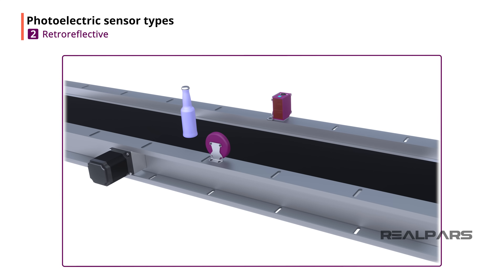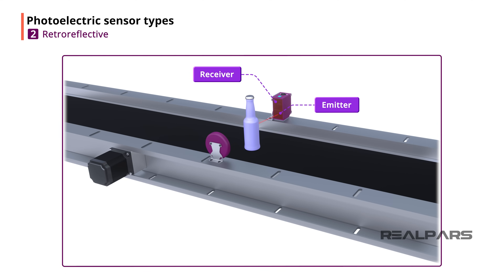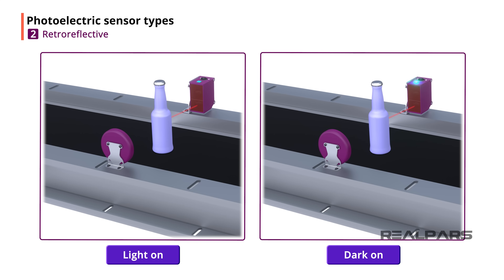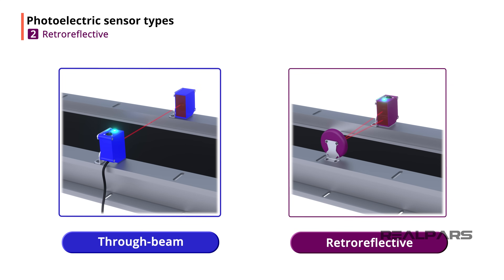Retro-reflective photoelectric sensors have the emitter and receiver together in the same component. For the retro-reflective sensor to work, the sensor's emitter needs to be pointed at a reflector and aligned, so the light travels from the sensor's emitter to the reflector and then bounces back to the sensor's receiver. The retro-reflective sensor output works the same as the through-beam sensor output: the output is on if the light is not blocked, and off if the light is blocked. Retro-reflective sensors can also have a light on/dark on mode selector switch. Retro-reflective sensors have a shorter detection range compared to through-beam sensors, because the light has to travel to a reflector and then back to the sensor, instead of just traveling straight to the receiver.